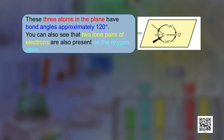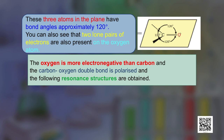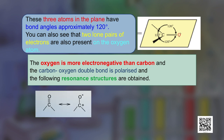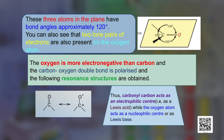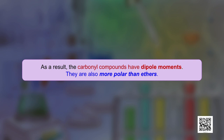There are 2 electrons — a lone pair — present on the oxygen atom. Since oxygen is more electronegative than carbon, the carbon-oxygen double bond is polarized. As shown in the resonance structures, there is a negative charge on the oxygen and a positive charge on the carbon. Consequently, the carbonyl carbon acts as an electrophilic center (Lewis acid), while the oxygen atom acts as a nucleophilic center or base. As a result, carbonyl compounds have dipole moments and are more polar than ethers.